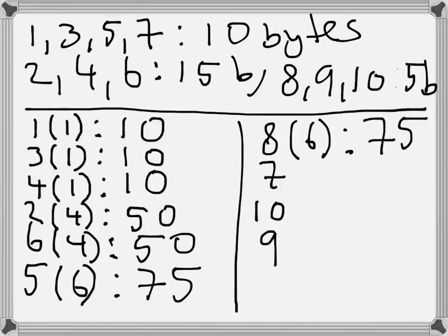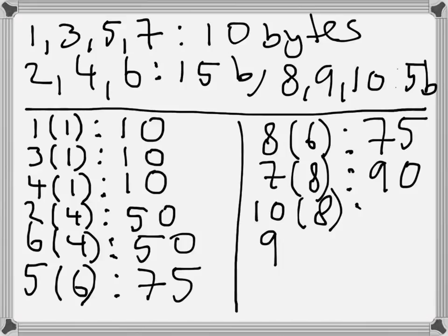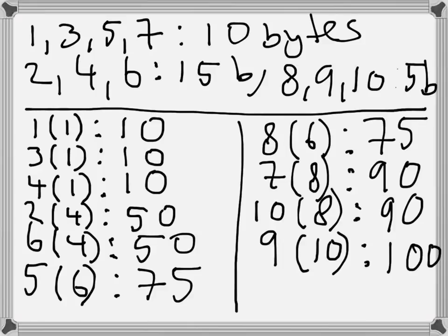When I receive number 7, I have now received everything correctly up through packet number 8, and therefore the acknowledgement number would be 90. The story repeats again with packet number 10 — the last correctly received is 8, giving acknowledgement number 90. But when I receive packet number 9, I have now correctly received all packets up through packet number 10, and therefore I can send acknowledgement number 100.